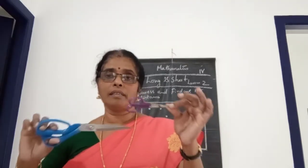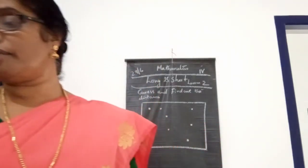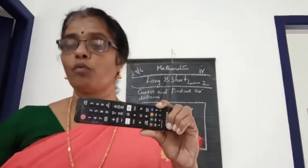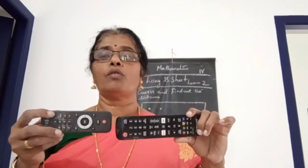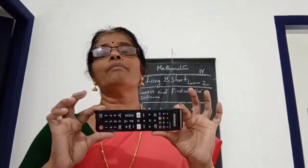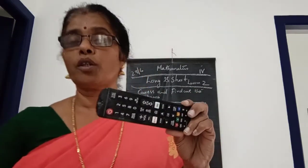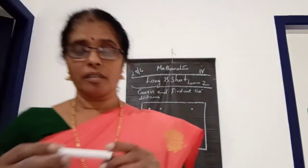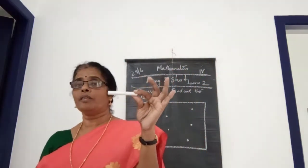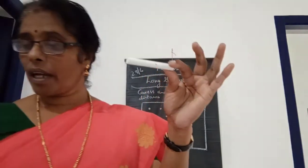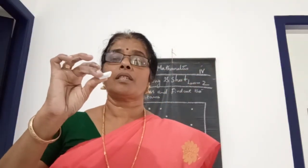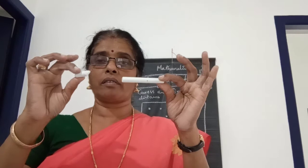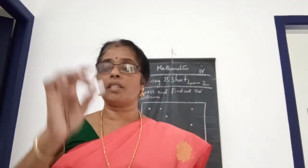This one is the long one and this one is the short one. Then you can see here — what is this? This one is a remote. And what is this? This also — another one. This one is the short one and this one is the long one. This one is the long one and this one is the short one.